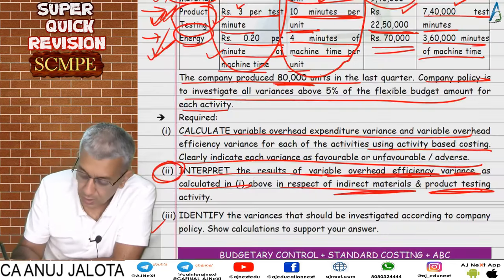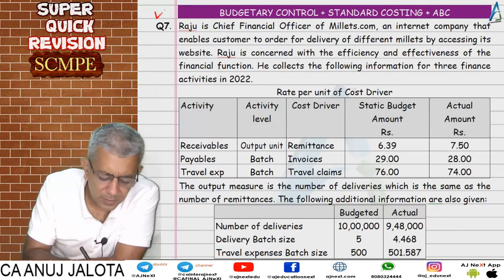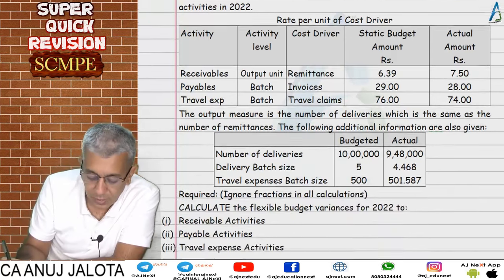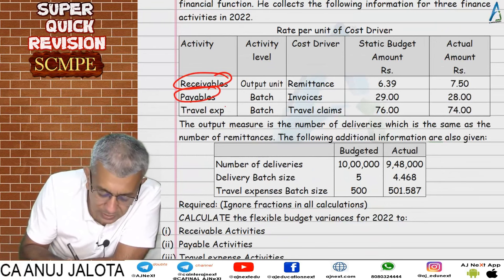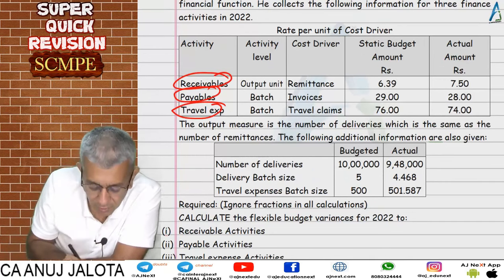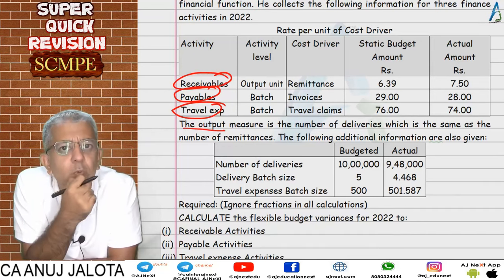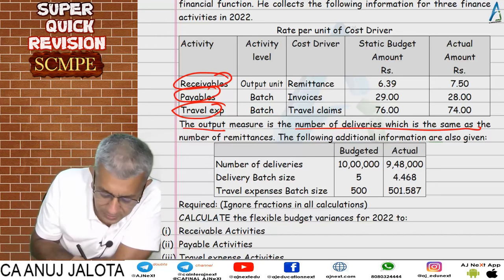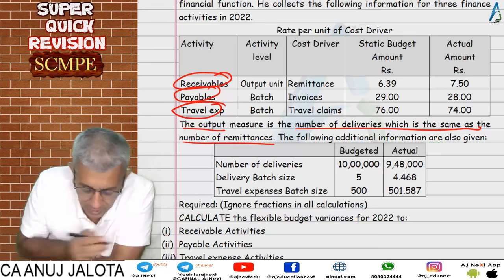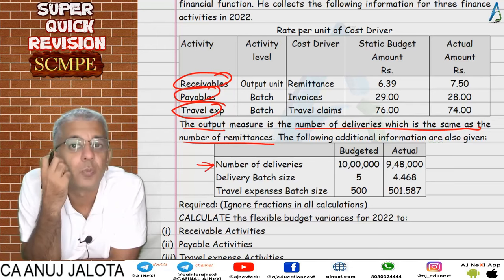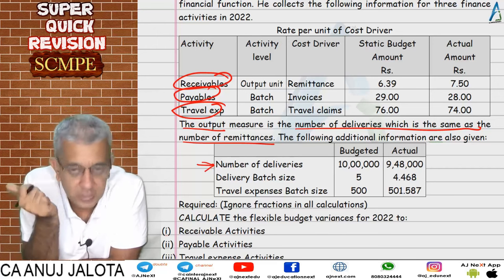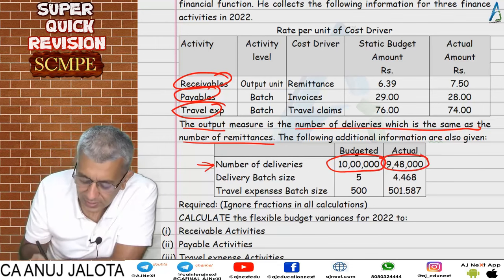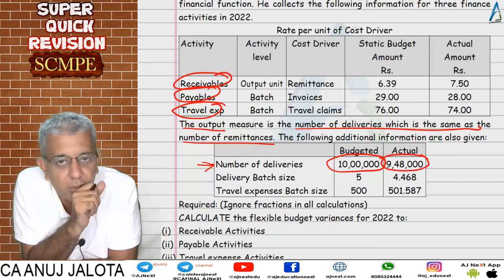Question number seven involves budgetary control plus standard costing plus activity based costing. Three types of variances need to be computed: receivables, payables, and travel expenses. Output here is number of deliveries, which is the same as number of remittances. Given standard is for 10 lakh units; in reality 948,000 were made, so revised standard is prepared for 948,000.